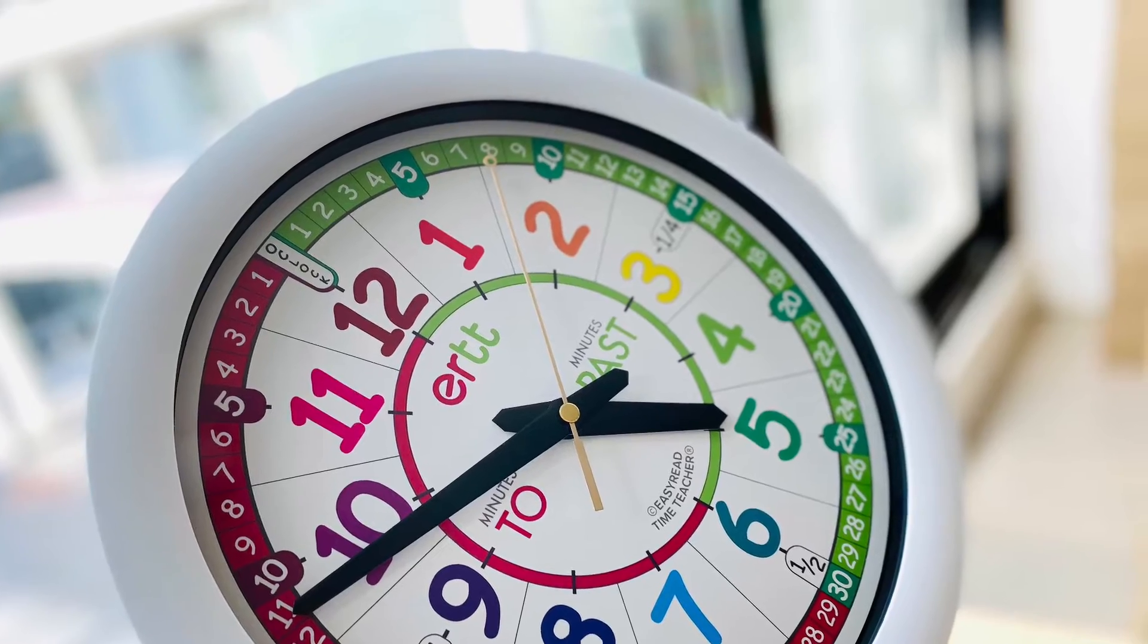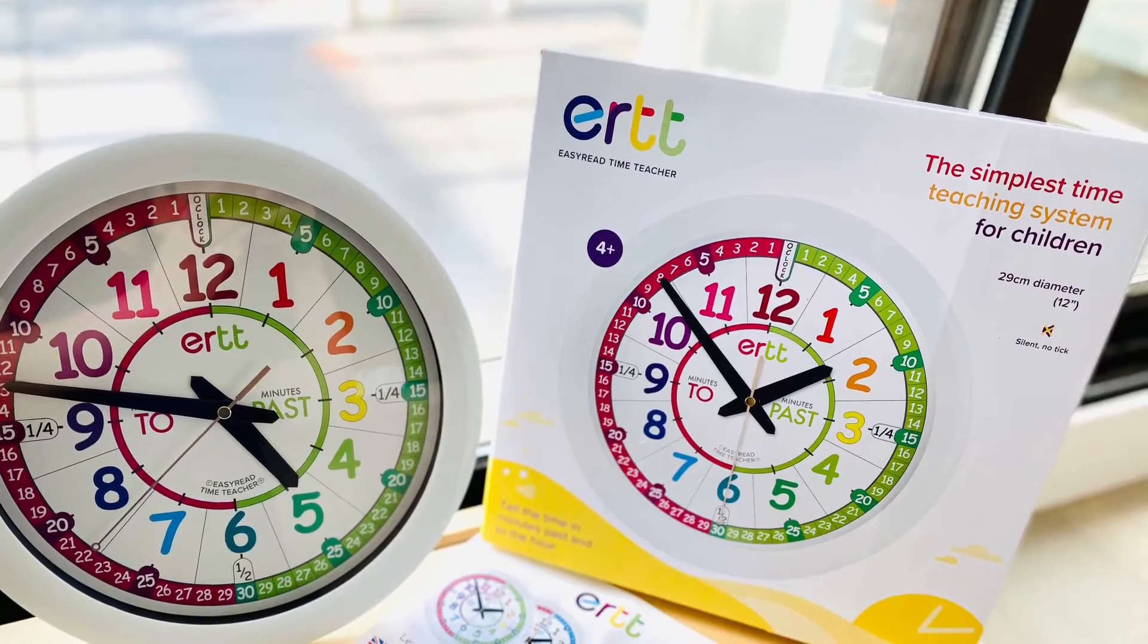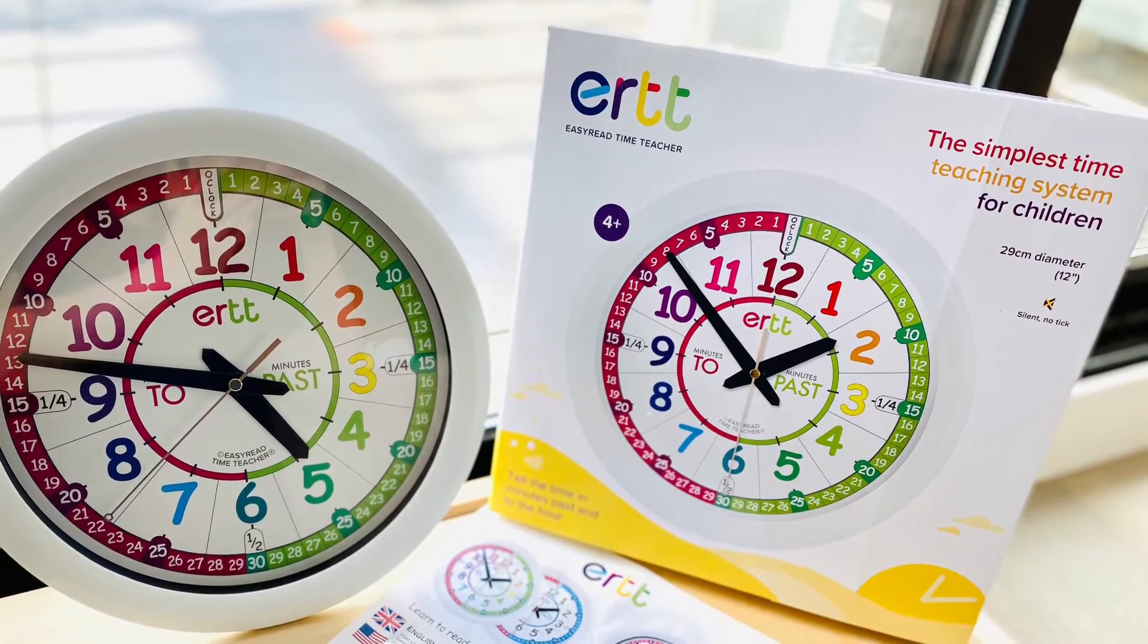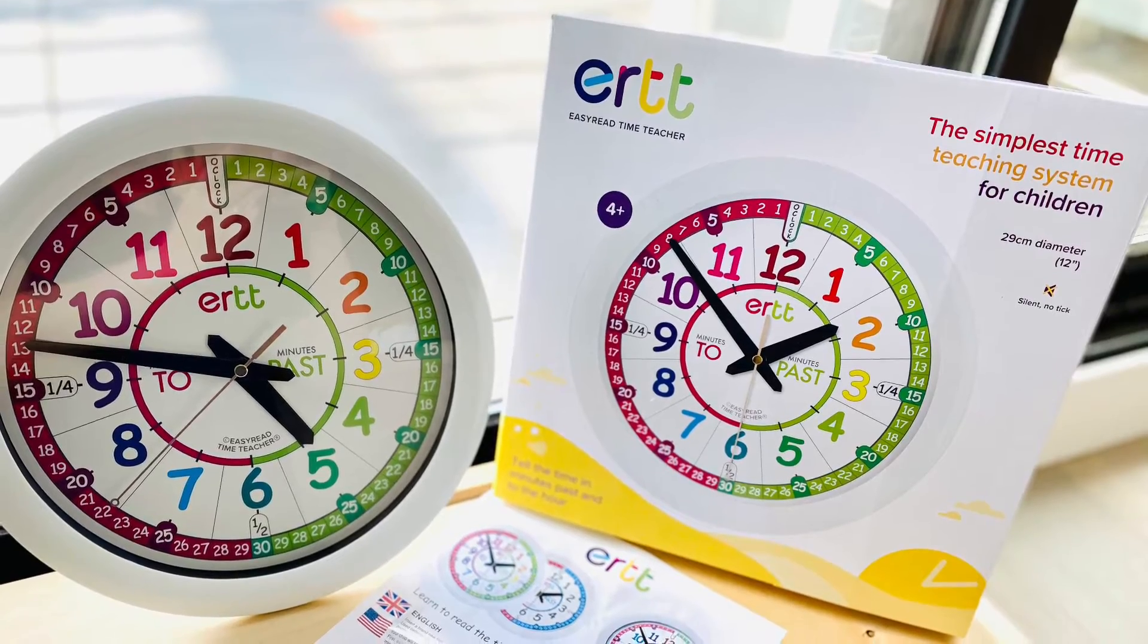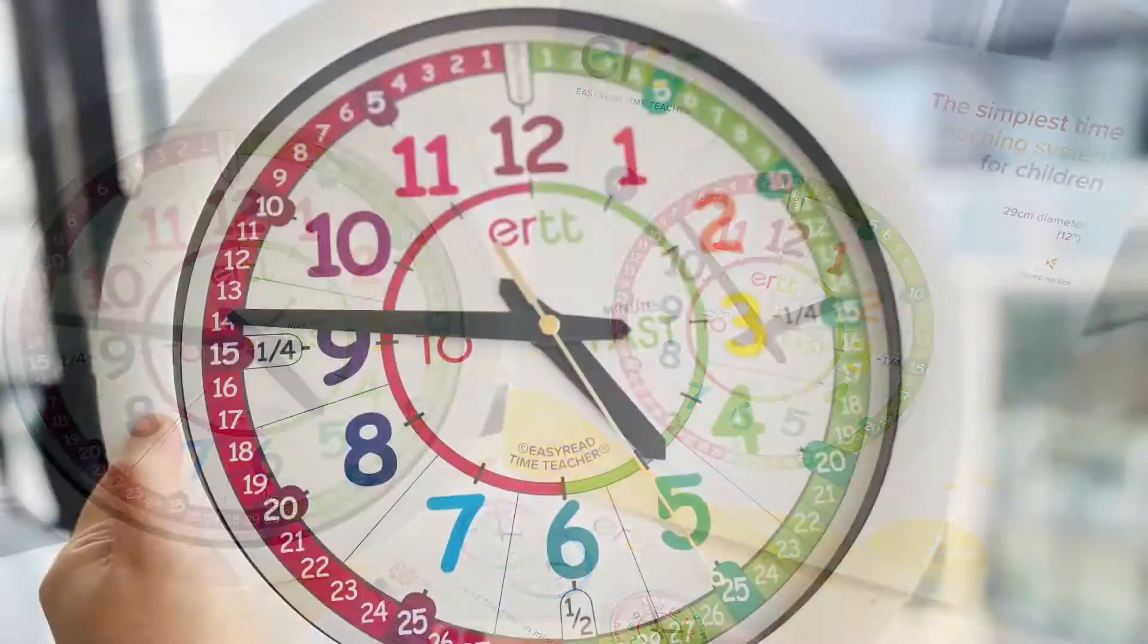The circular clock is divided into two major color zones. The green zone on the right points us to the minutes past, and the left red zone tells us the minutes to time. I've never seen any clock that focuses on telling time in such a conversational and traditional English style before.